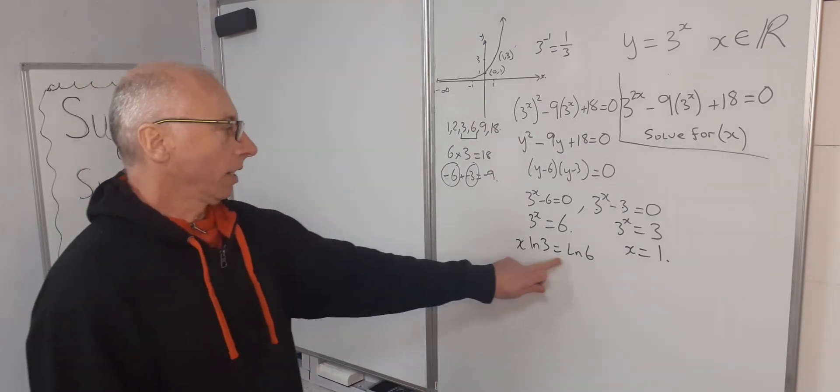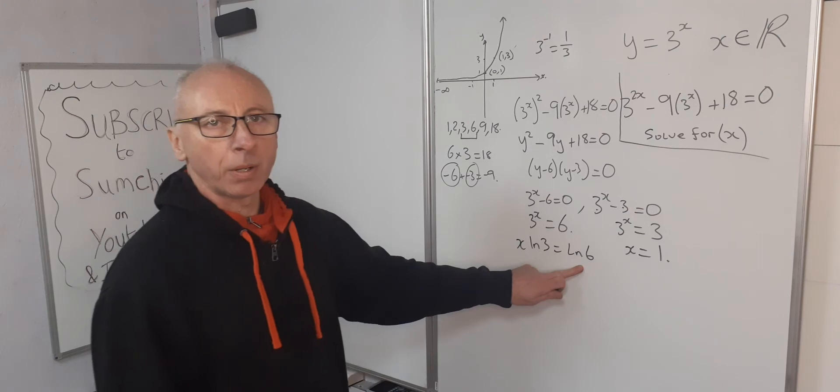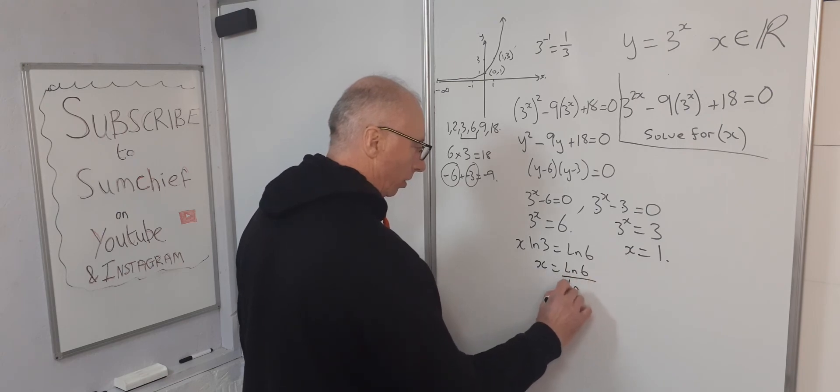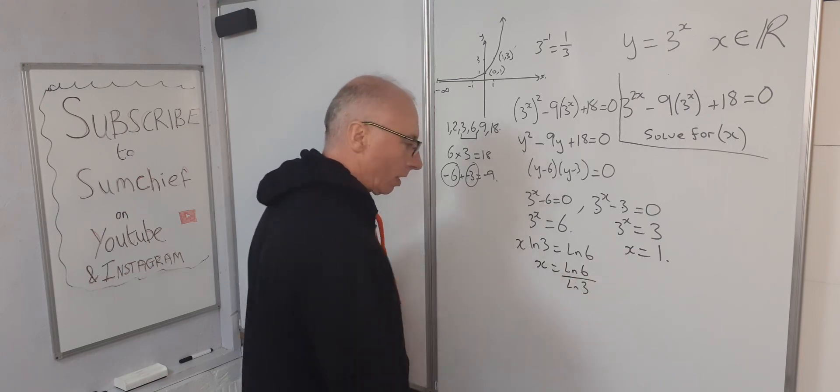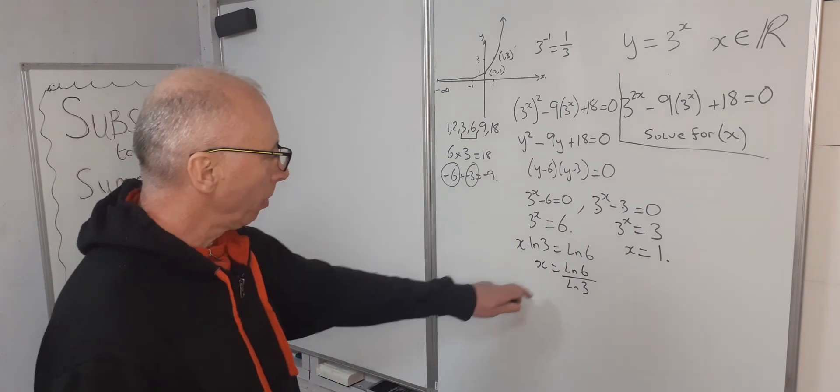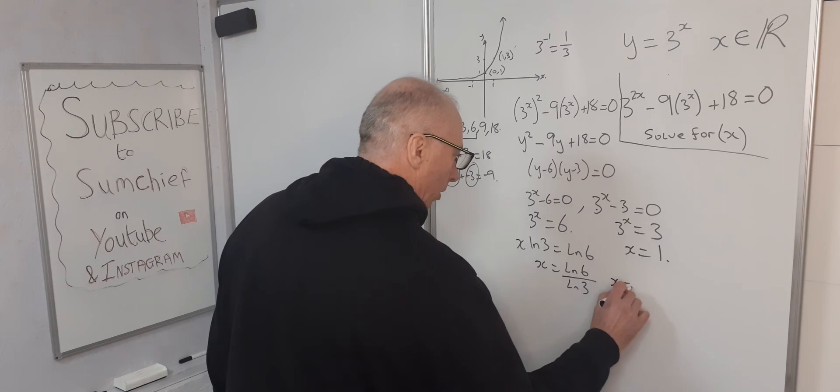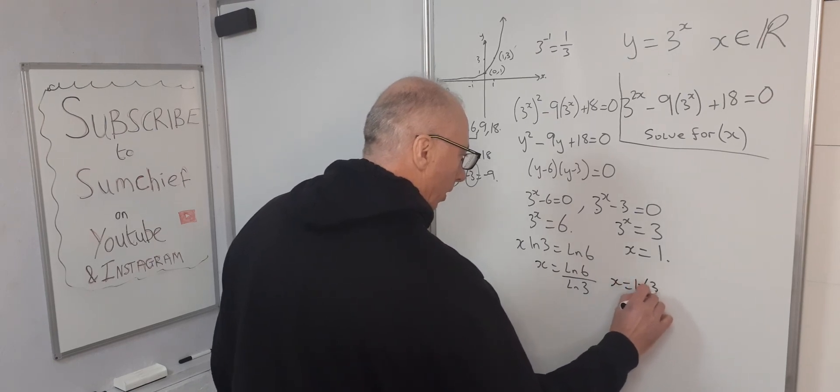Divide both sides by natural log of 3. We get x equals natural log of 6 over natural log of 3. So to two decimal places, put that into our calculator, we get x equals 1.63.